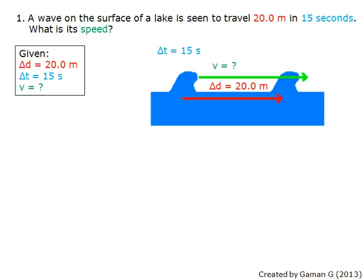A wave on the surface of a lake is seen to travel 20 meters in 15 seconds. What is its speed? The first step is to determine an appropriate equation. As both wavelength and distance have units of meters, you must carefully determine if the value stated is the distance between crests, troughs, or how far the wave travels. In this case, it is the distance traveled by the wave, and so this equation is chosen.